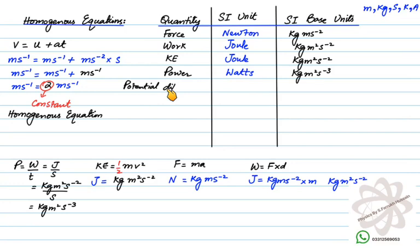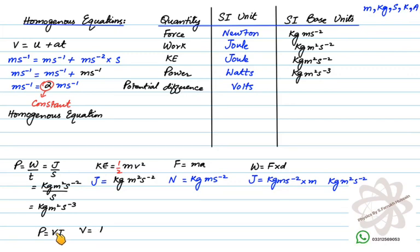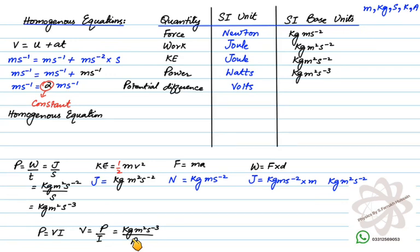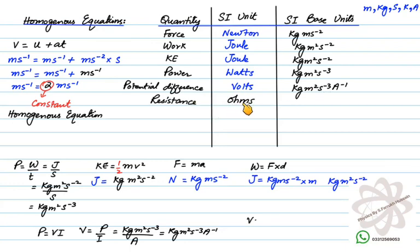The SI unit of potential difference is volt. Using the equation P = VI, making V the subject gives V = P/I. The SI base unit of power is kg m²s⁻³ and current is ampere, so the SI base unit of voltage is kg m²s⁻³ A⁻¹.